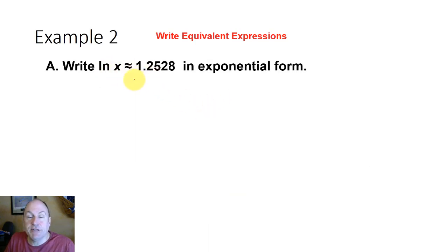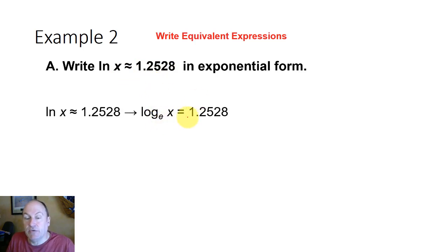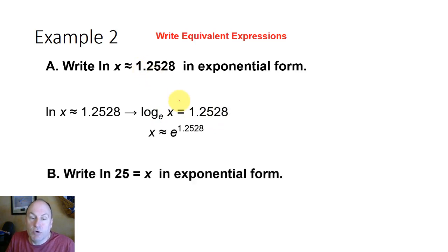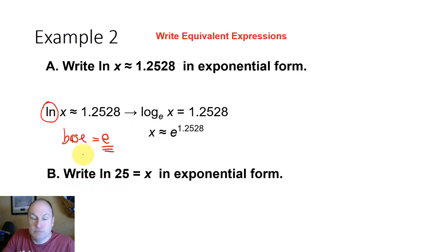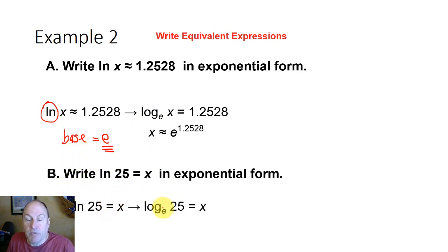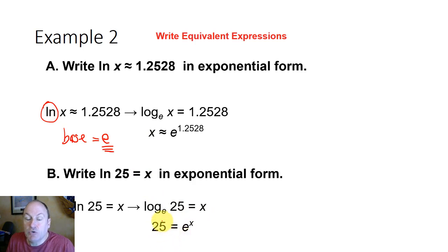Writing natural logs in exponential form just reverses that process. The natural log of x ≈ 1.2528 can be written as log base e of x equals 1.2528, but in exponential form that's x = e^1.2528. Whenever you see natural log, your base is e. The natural log of 25 equals x can be written in exponential form as e^x = 25.